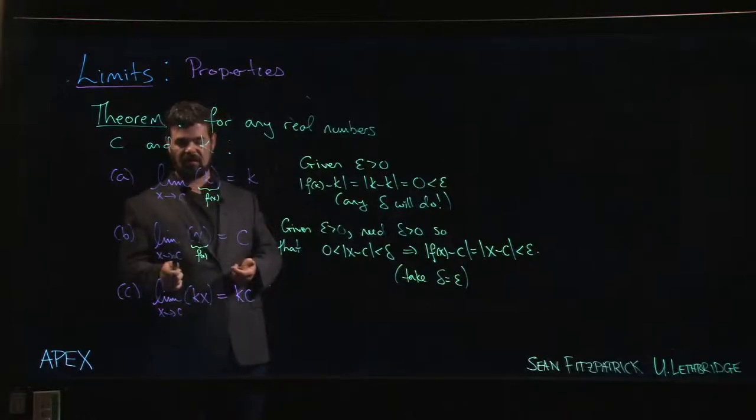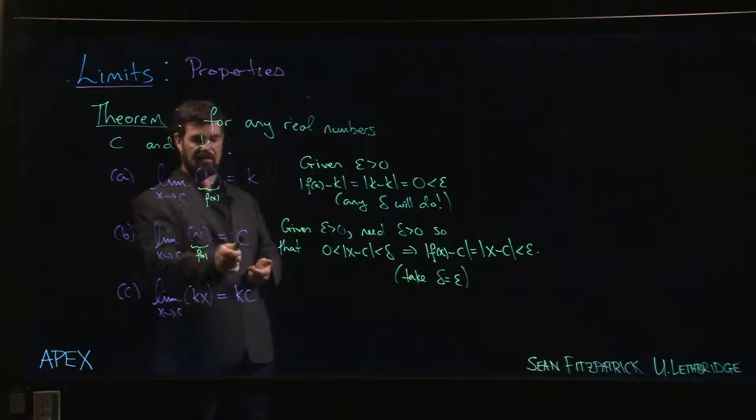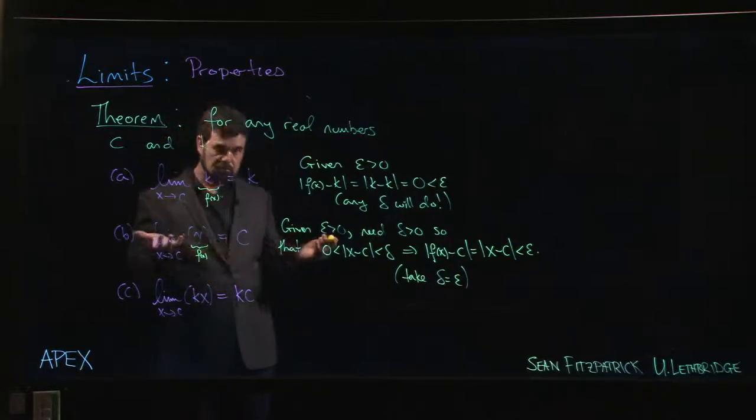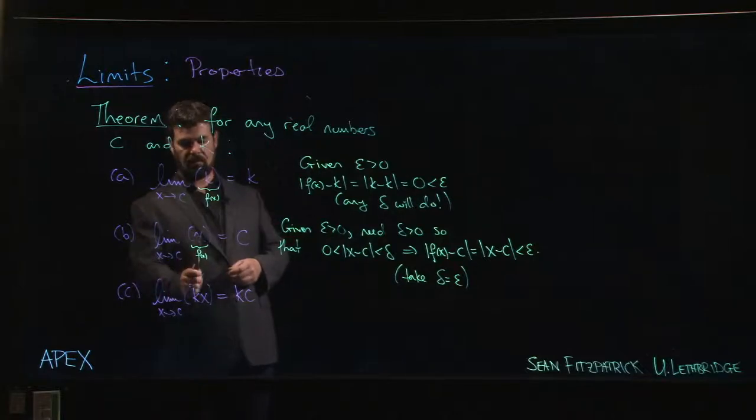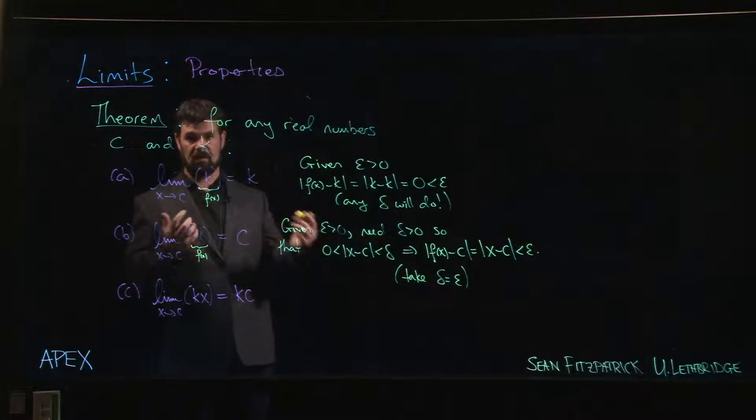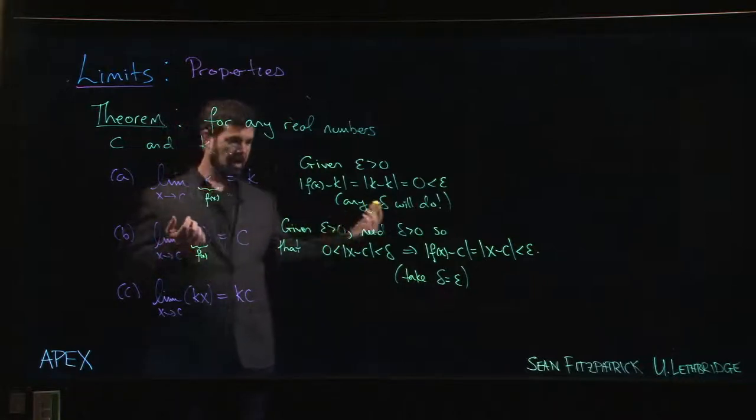Of course, the statement over here if you kind of read it out loud also seems like a tautology. It's saying, if x is approaching c then x is approaching c. Again, yes, clear, although there is a subtle difference between the two x's. Here this x is an input for a function; it just happens that this function produces an output that's identical to the input.